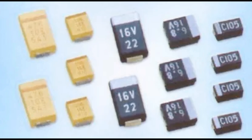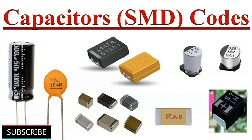Capacitors are frequently used for signal filtering and tuning in electronic circuits. Their ability to selectively pass or block certain frequencies makes them valuable components in applications where signal conditioning is essential. High-pass and low-pass filters: Capacitors are key elements in the design of high-pass and low-pass filters. In a high-pass filter, capacitors allow high-frequency signals to pass while attenuating low-frequency signals. In contrast, low-pass filters allow low-frequency signals to pass while attenuating high-frequency signals. The cut-off frequency of these filters is determined by the values of resistors and capacitors in the circuit.